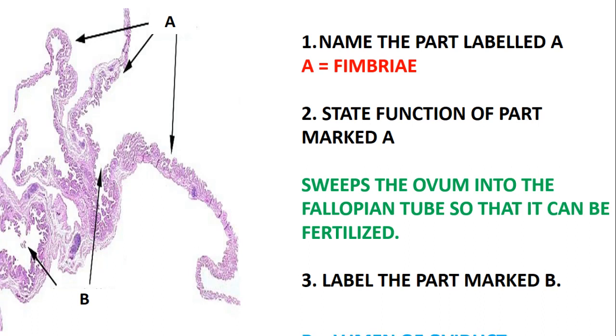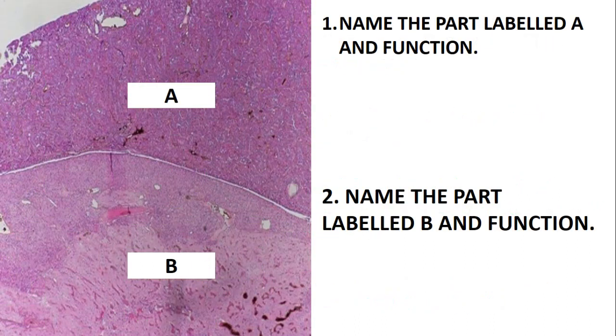Label the part marked B, which is just the lumen — and this lumen is the lumen of the oviduct.